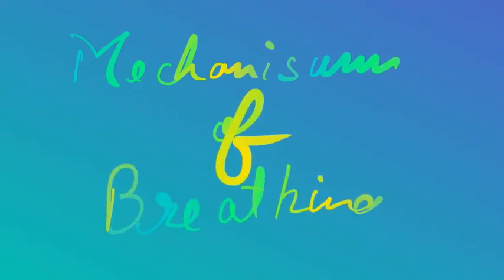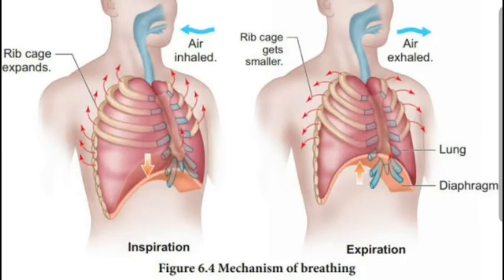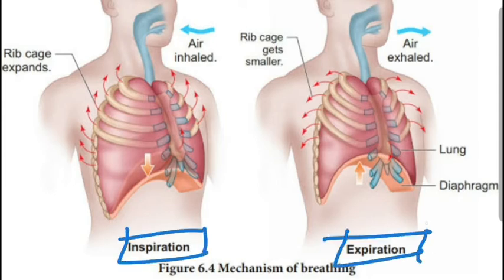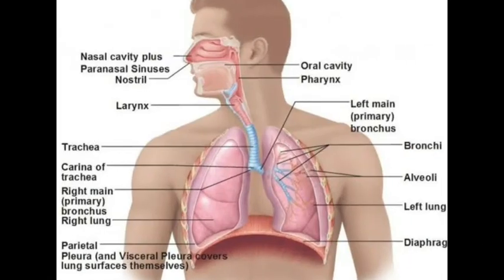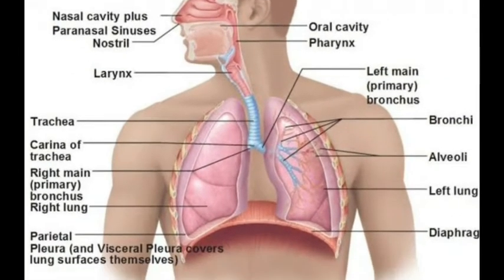Breathing involves two stages: first is inspiration and second is expiration. During inspiration, atmospheric air is drawn in, and during expiration, the alveolar air is released out. The movement of air into and out of the lungs is carried out by creating a pressure gradient between the lungs and the atmosphere.